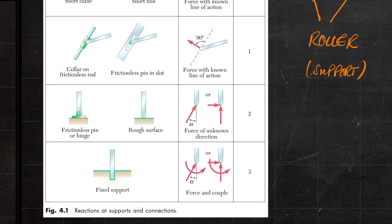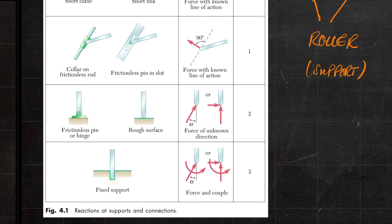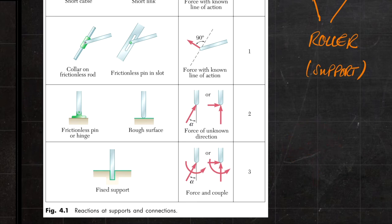The last support in 2D is what we call a fixed support — for example, a beam clamped to a wall. A fixed support applies two forces but also applies a moment, so it doesn't allow the member to rotate and doesn't allow it to move. Compare that with a hinge: a hinge prevents translation but does not resist rotation about the pin position itself.